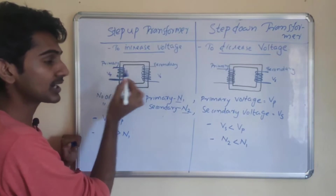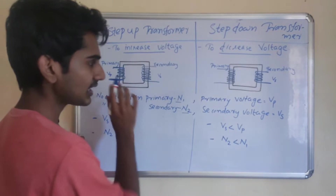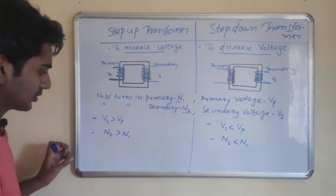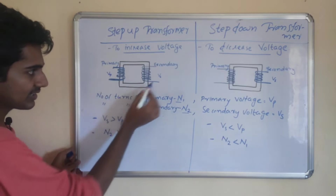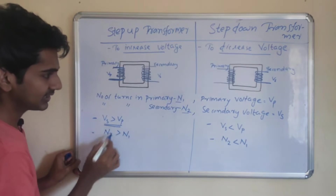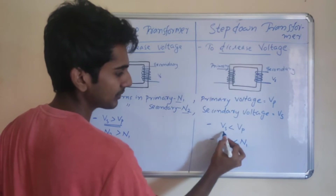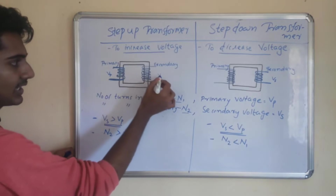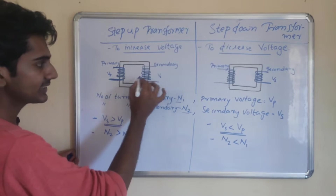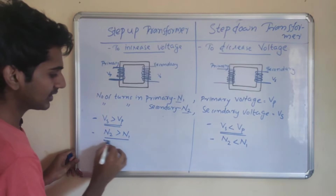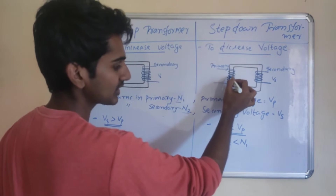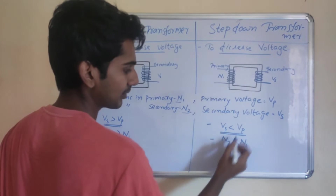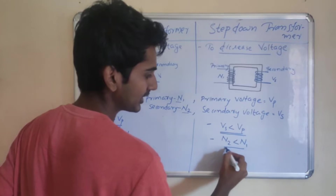For a step-down transformer, the secondary voltage Vs is less than Vp. The number of turns: the secondary turns are smaller than primary turns. So Vs is less than Vp, and N2 is less than N1. For a step-up transformer, the secondary voltage Vs is greater than Vp, and N2 is greater than N1. For an isolation transformer, N2 equals N1, so Vs equals Vp.